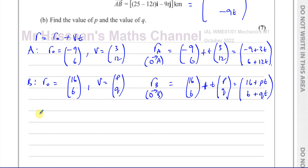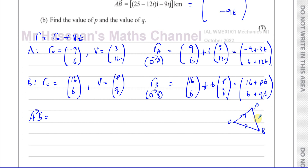We're told the vector from A to B, so in terms of P and Q we can work out what that vector is. The vector A to B equals OB minus OA — if you think about it, to get from A to B you go minus OA plus OB. So OB minus OA gives us the vector from A to B.